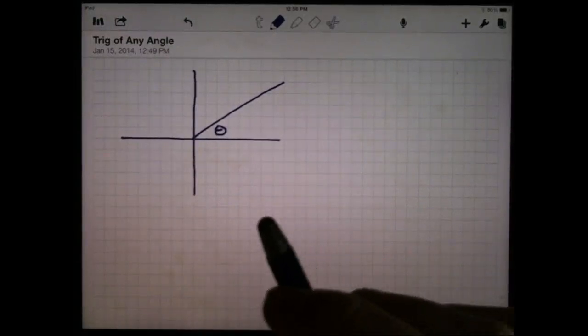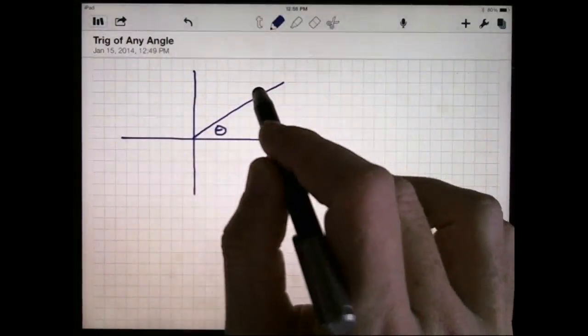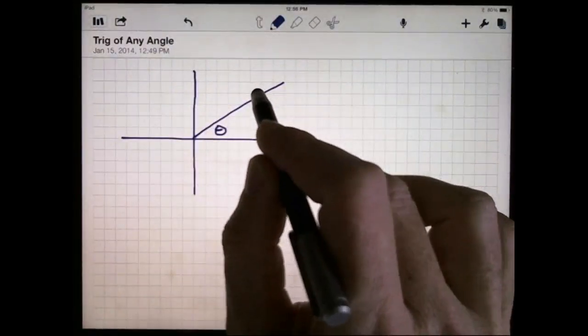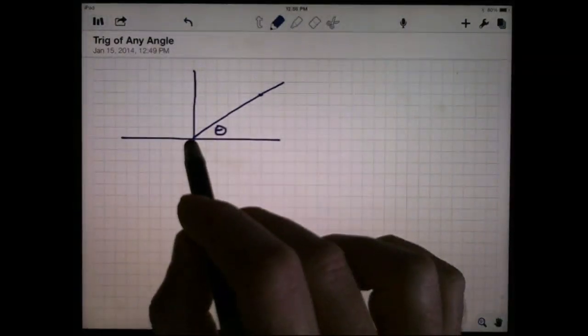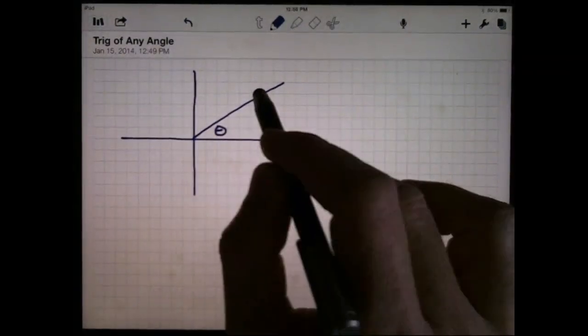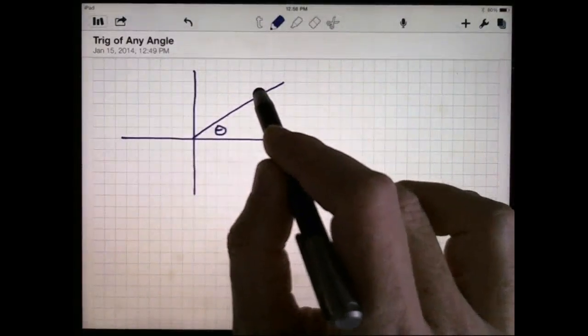Now what I need to do is pick a point, any point, on the terminal ray. Not the vertex, because if you take the vertex, that is on the terminal ray, but it's not really useful to us. So anything other than the vertex, pick that point.